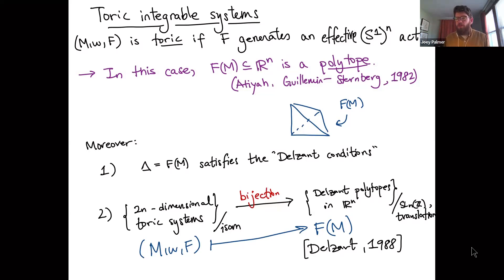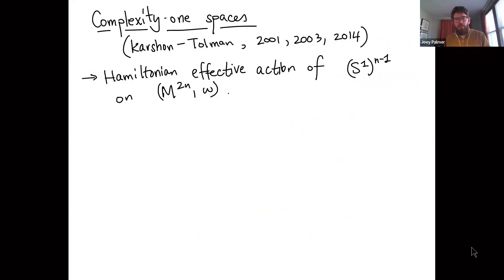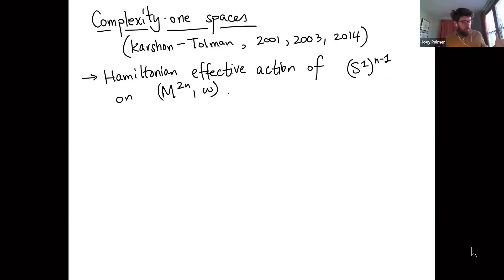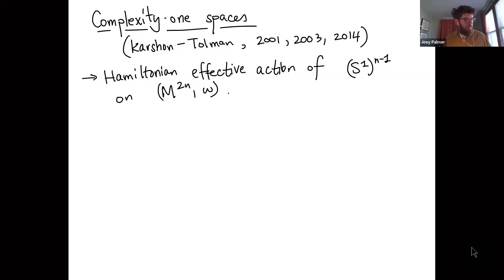Toric integrable systems are smooth toric varieties. Now let me introduce the other main player: complexity one spaces, extensively studied by Karshon and Tolman. Essentially, we take the nice situation of a toric integrable system — n functions generating a torus action — and forget one of the functions. We have an action of a torus that isn't quite n-dimensional but one less, dimension n−1.